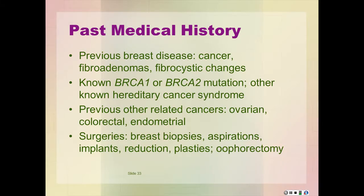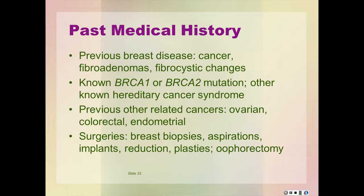The past medical history should be explored and include whether there has been any previous breast disease such as cancer, fibroadenomas, or fibrocystic changes. Is there a history of known BRCA1, BRCA2, or other genetic mutations? Any known hereditary syndrome such as hereditary non-polyposis colorectal cancer, Li-Fraumeni syndrome, or Cowden syndrome? Are there any previous related cancers such as ovarian, colorectal, or endometrial? What kind of surgeries has the patient had? Ask about breast biopsies, aspirations, breast implants, breast reductions, other plastic surgery, and also about lumpectomies. Have they had their ovaries removed? This could produce hormonal changes.